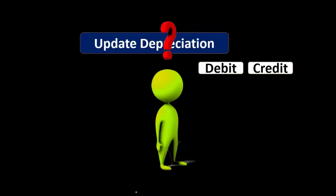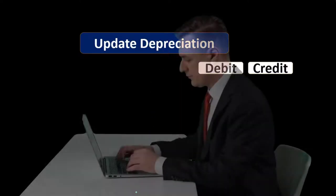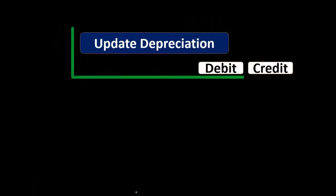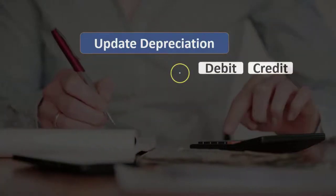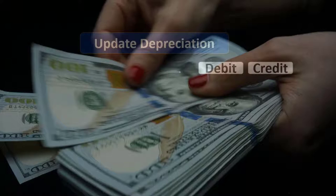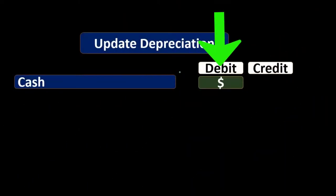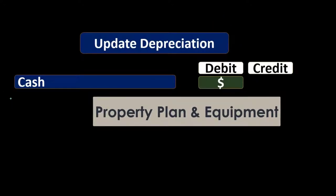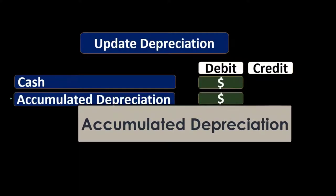Whenever we think of any disposal, we want to go through our series of questions related to the disposal process so that we have a system to work through in each case and scenario. I would do this with a journal entry. The series of questions starts with: is cash affected? If it is, we know we're going to start our journal entry with a debit to cash.